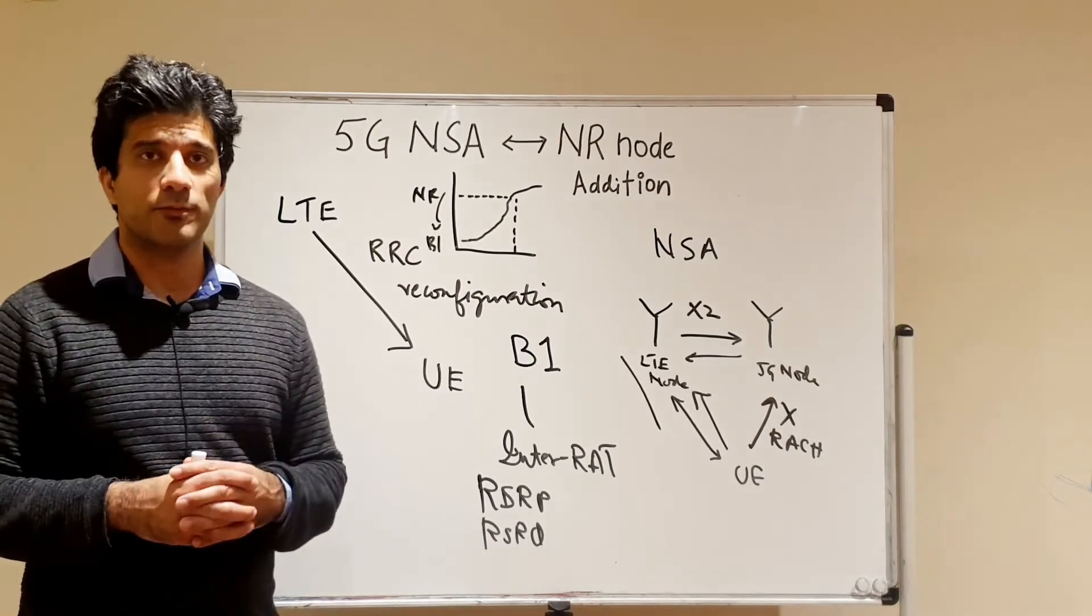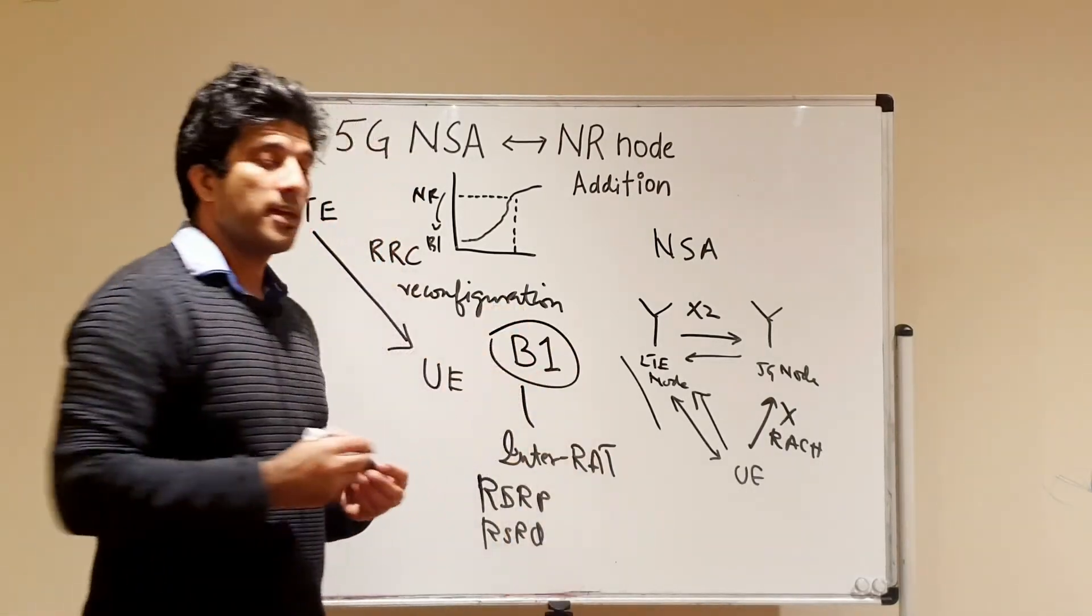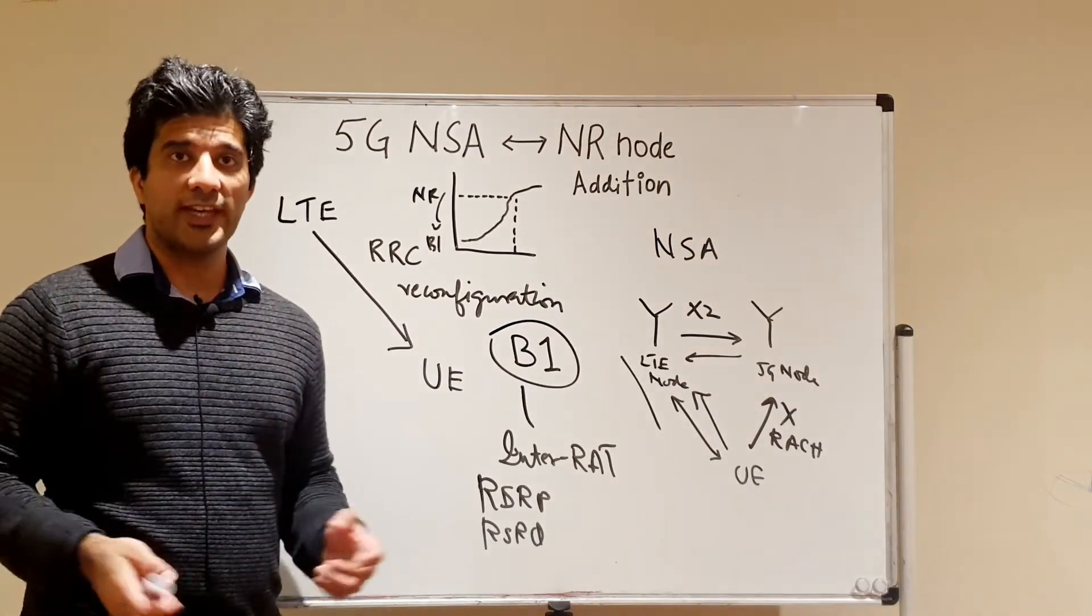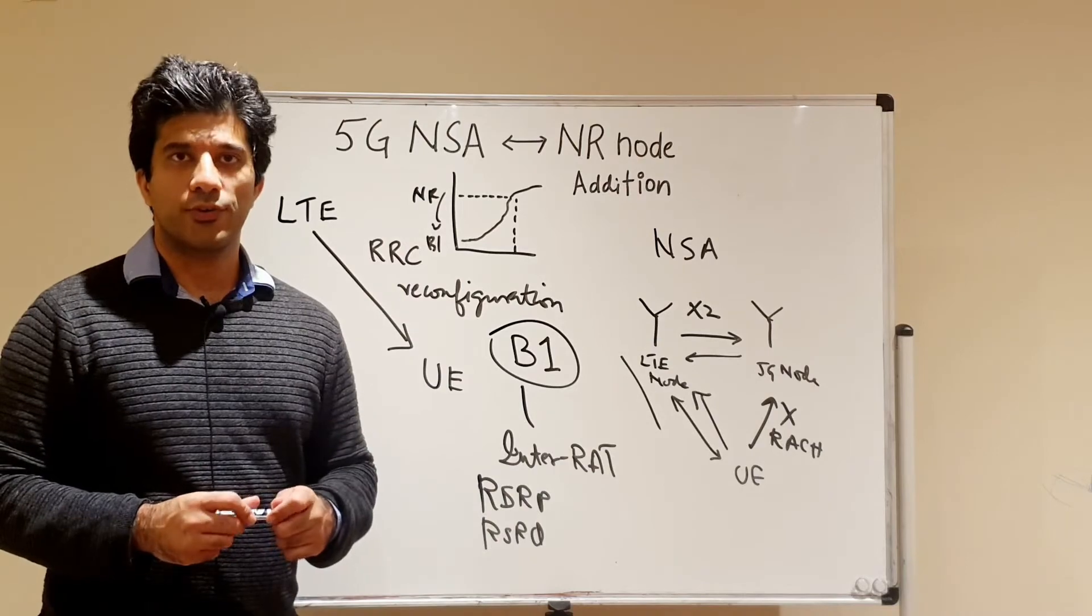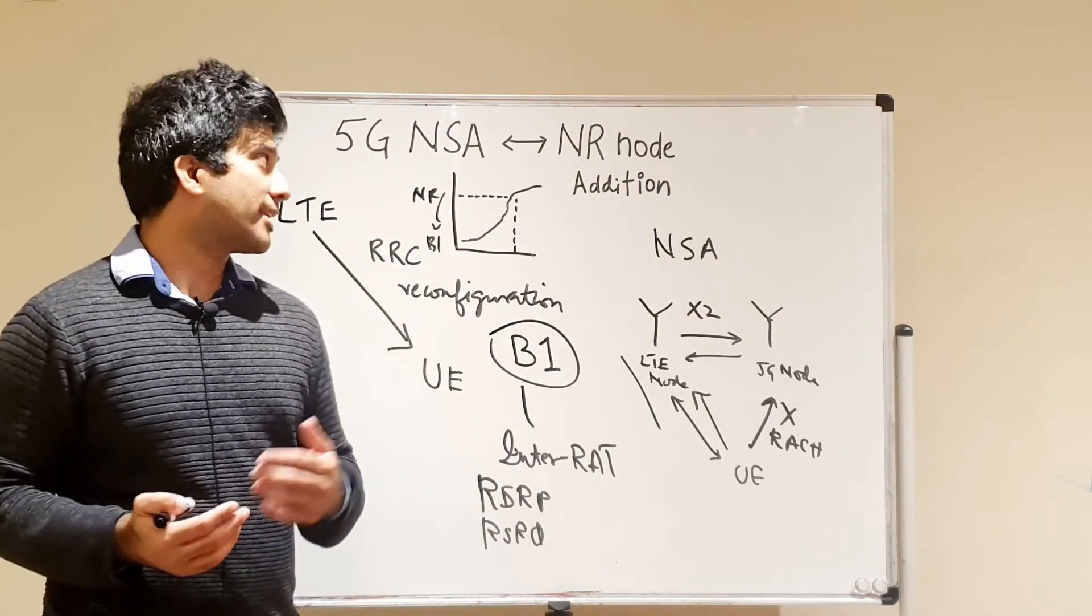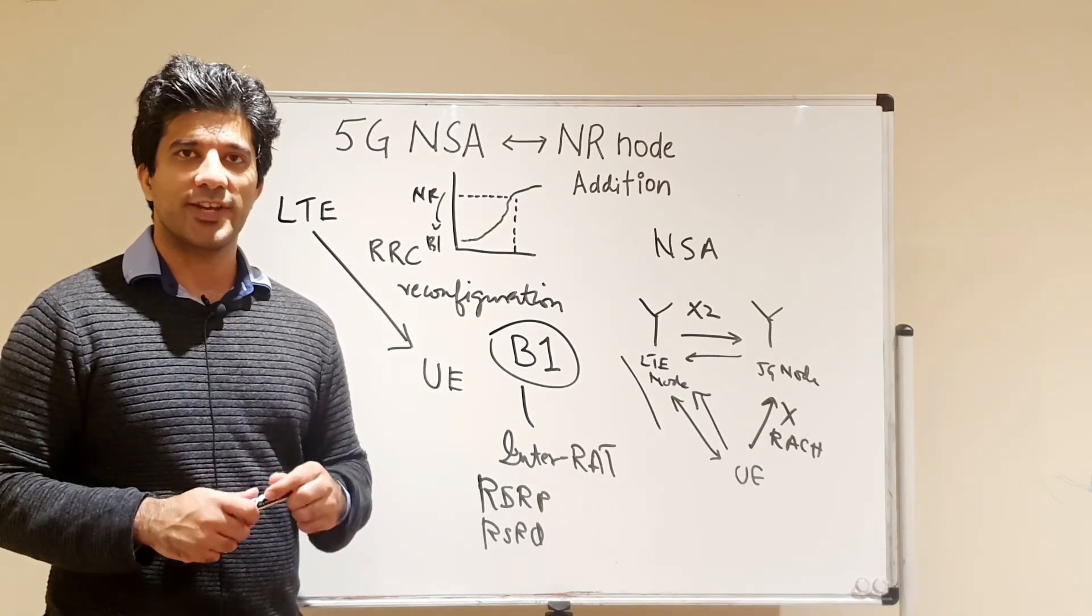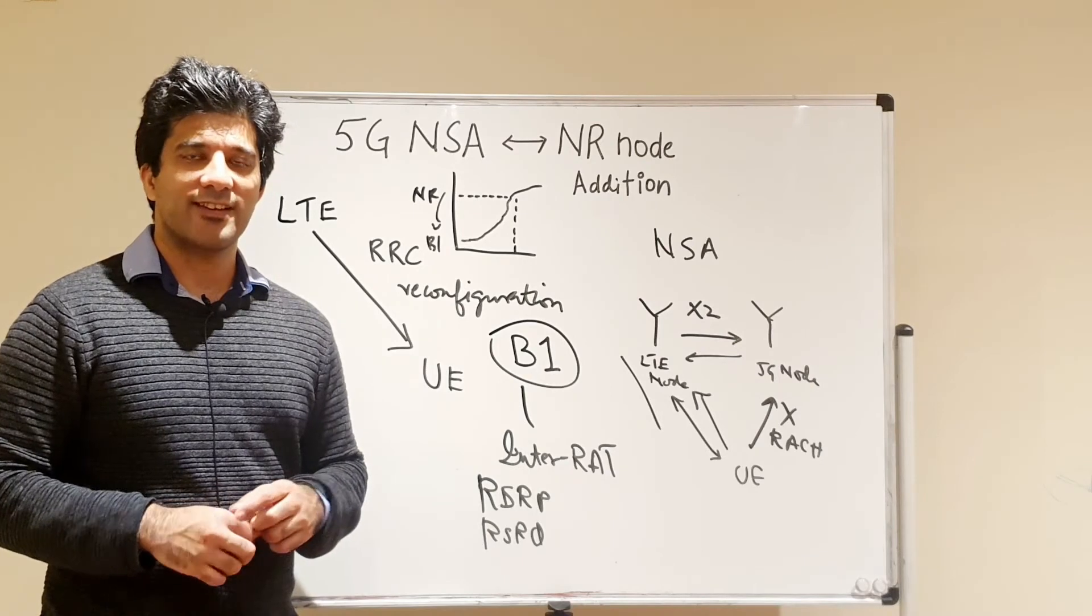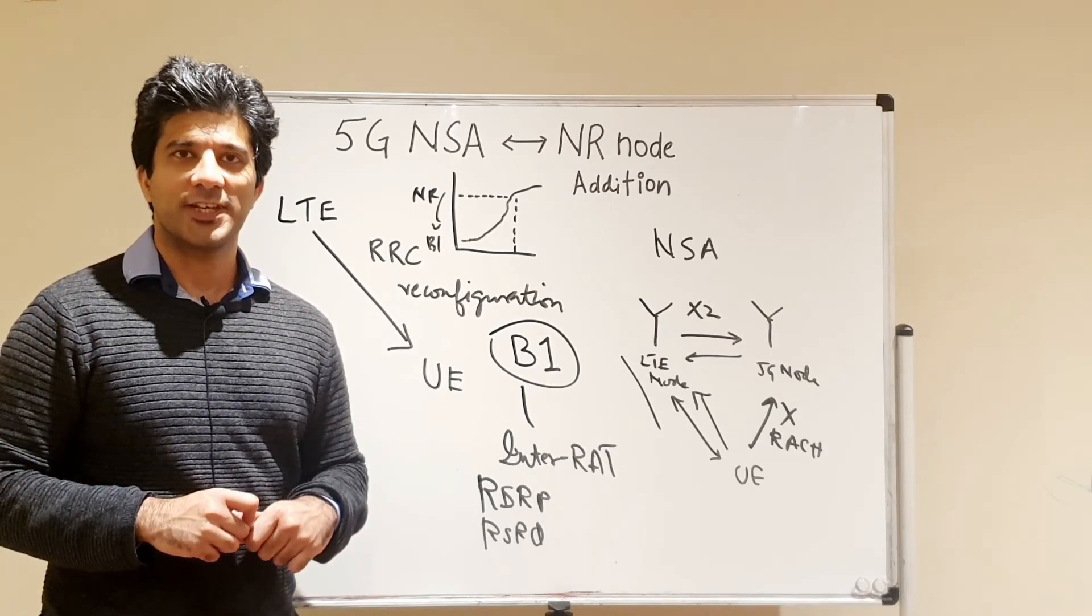This was a short description on how the B1 threshold basically is used, and once you're working in 5G networks, this threshold will play a very important role in your NR functionality within NSA mode. Thank you for listening to today's video. Do subscribe and do share, and let me know if you need any more information. Thank you.